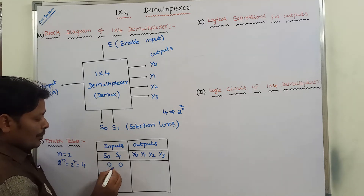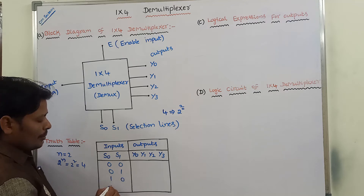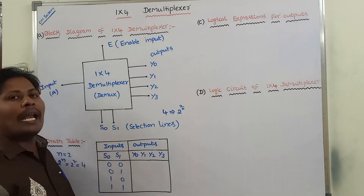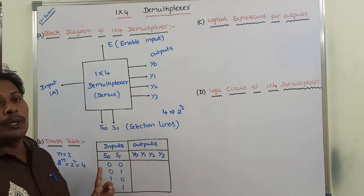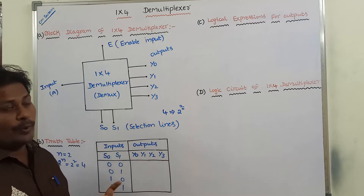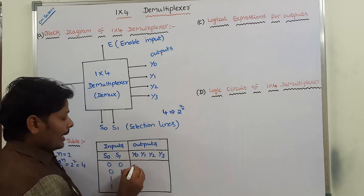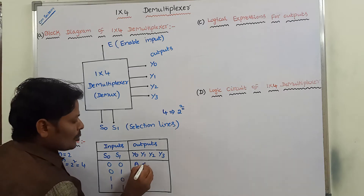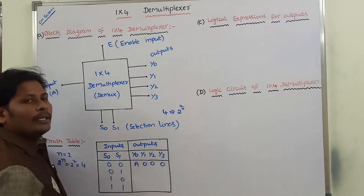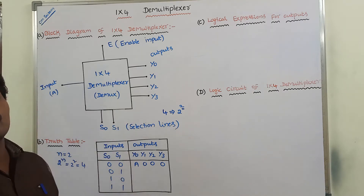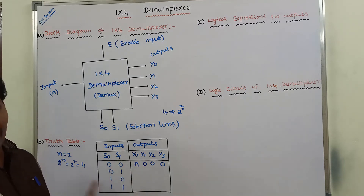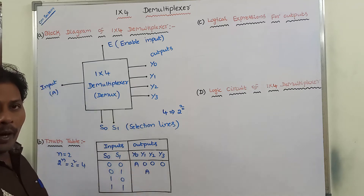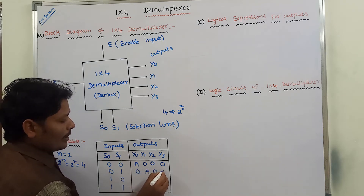The 4 possible input combinations are: 0,0 — 0,1 — 1,0 — 1,1. When S0, S1 equals 0, 0, the equivalent decimal value is 0, therefore Y0 output is selected. The input line is connected to the Y0 output line and the remaining outputs are 0s. When S0, S1 equals 0, 1, the equivalent decimal value is 1, therefore Y1 output is selected. The input line A is connected to Y1 output line and the remaining output lines are 0s.